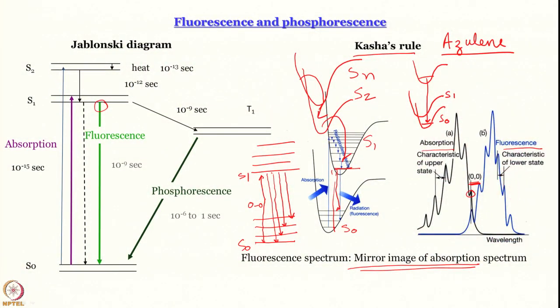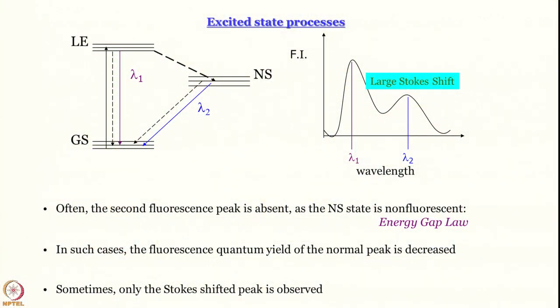Coming back to more regular situations, for molecules like pyridine, naphthalene, anthracene, and these aromatic hydrocarbons, you get a mirror image spectrum. Fortunately, it does not hold for many molecules — because if it did, things would be very systematic, very easy, and therefore absolutely boring. Fortunately, post-excitation many molecules undergo excited state processes. We are going to discuss some of these excited state processes. But let us first talk about them in a general manner.